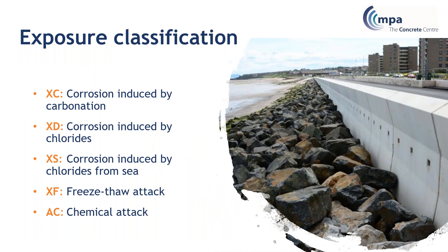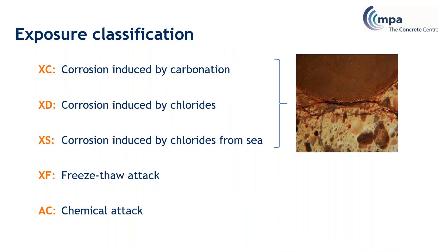Now let's look at exposure classification. This is about making sure you have the right concrete for where you're going to put it. Concrete and the reinforcement within it are affected by different exposures. The first three - XC, XD, and XS - are all to do with the reinforcement. If you don't have reinforced concrete - if it's mass concrete - then you don't need to worry about XC, XD, or XS, because they only affect the reinforcement.